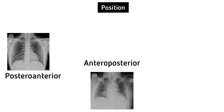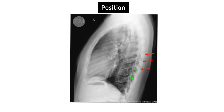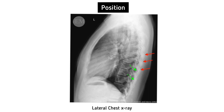Next, position. Position can be posterior-anterior, anterior-posterior, lateral, etc. The normal lateral chest x-ray view is obtained with the left chest against the cassette. If the x-ray is a true lateral, the right ribs are larger due to magnification and are usually projected posteriorly to the left ribs.